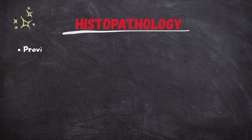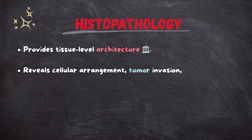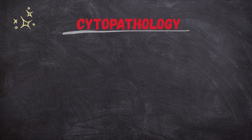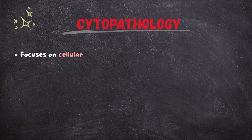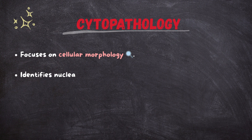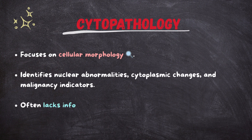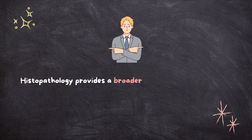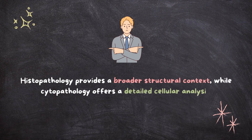Histopathology provides tissue-level architecture, revealing cellular arrangement, tumor invasion, and structural abnormalities, and assesses the presence of fibrosis, necrosis, and inflammation. Cytopathology focuses on cellular morphology, identifying nuclear abnormalities, cytoplasmic changes, and malignancy indicators, but often lacks information about tissue architecture. Key difference: histopathology provides a broader structural context while cytopathology offers a detailed cellular analysis.